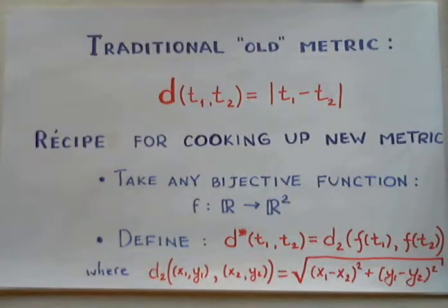Easy to show that this function satisfies all necessary conditions to be a metric. Metric defined in this way is called the pullback of the Euclidean metric of the plane.